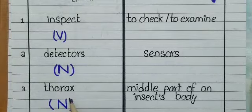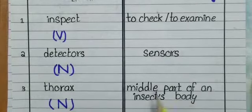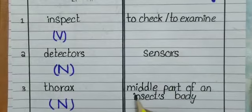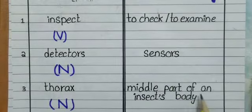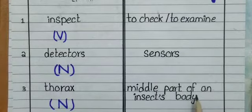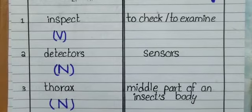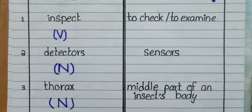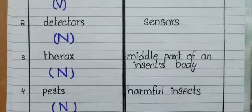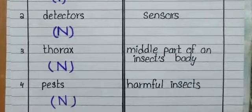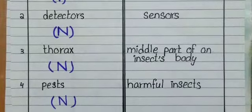Now move to the next word: 'thorax' — T-H-O-R-A-X. According to grammar it is a noun. The meaning of thorax is the middle part of an insect's body. It is called the thorax.